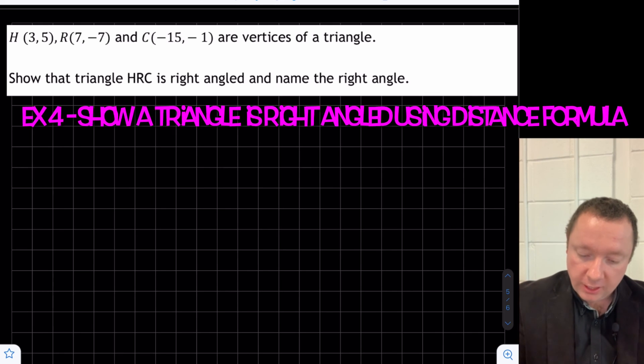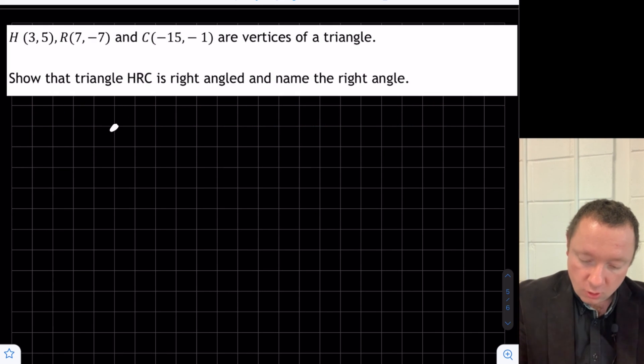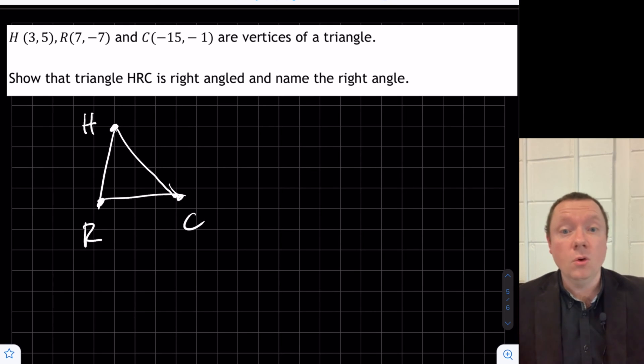H, R and C are vertices of a triangle, show that it is right-angled and name the right angle. So again, I'm going to draw a non-accurate sketch, but we've got H, R and C. I want to show that one of these angles is right-angled. So let's get started with our distances.